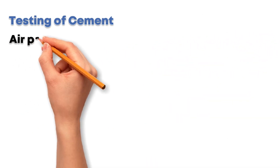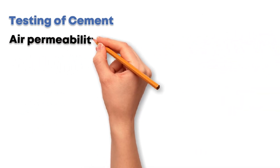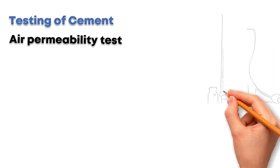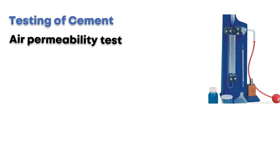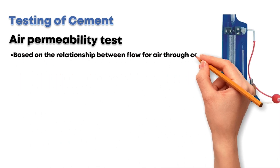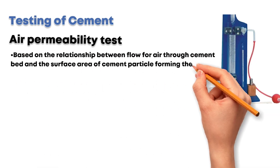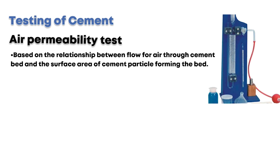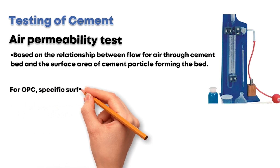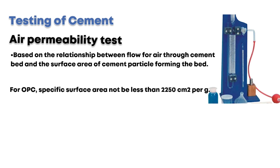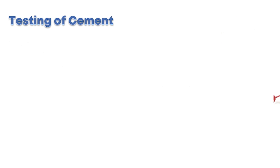The second laboratory test is the air permeability test. Blaine's air permeability apparatus is used, based on the relationship between flow of air through a cement bed and the surface area of cement particles forming the bed. For ordinary Portland cement, the specific surface area should not be less than 2250 square centimeters per gram.